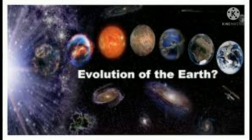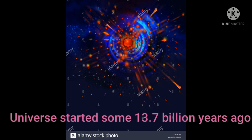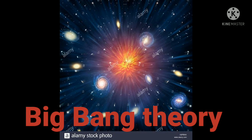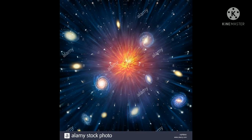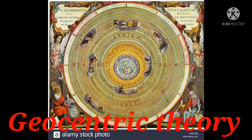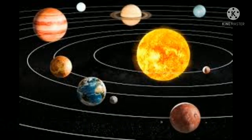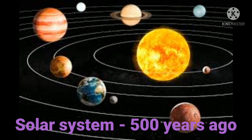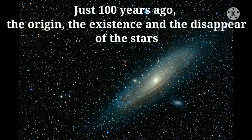Let us know about the evolution of the Earth. The universe started some 13.7 billion years ago with a Big Bang and may end several billion years later. There are many formed galaxies; in each galaxy there are many solar systems, and within those solar systems there are many planets. Earlier, people believed the Earth was firm and stationary and the rest of the heavenly bodies revolved around it — this theory was called the geocentric theory. Just 500 years ago it was proved that the Earth revolves around the Sun, and just 100 years ago theories about the origin, existence and disappearance of stars in the universe were propounded.